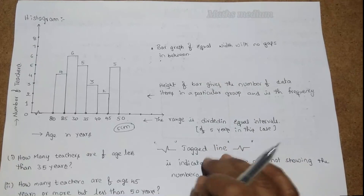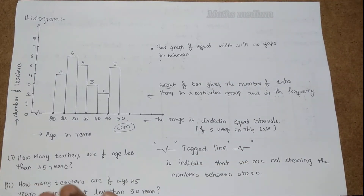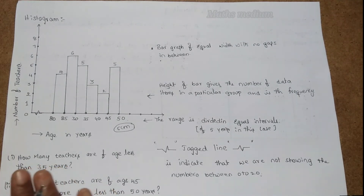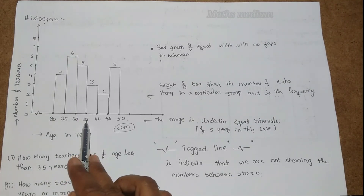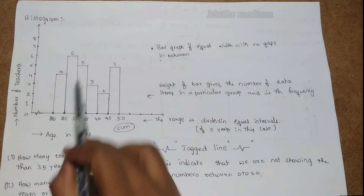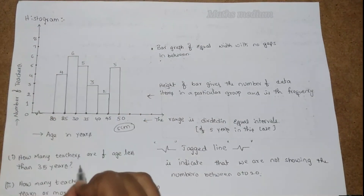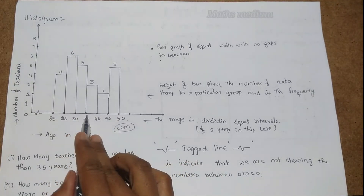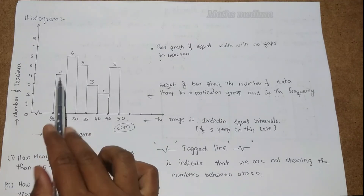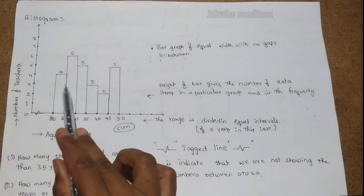Now let's look at questions. Solving these will give better understanding of how we can express answers through a histogram. Question one: how many teachers are of age less than 35 years? Below 35 we have the intervals up to 35, so we add: 5 + 6 + 4 = 15 teachers.